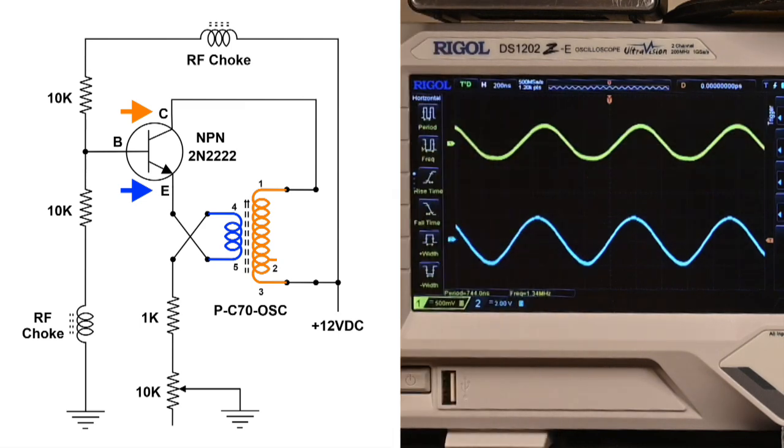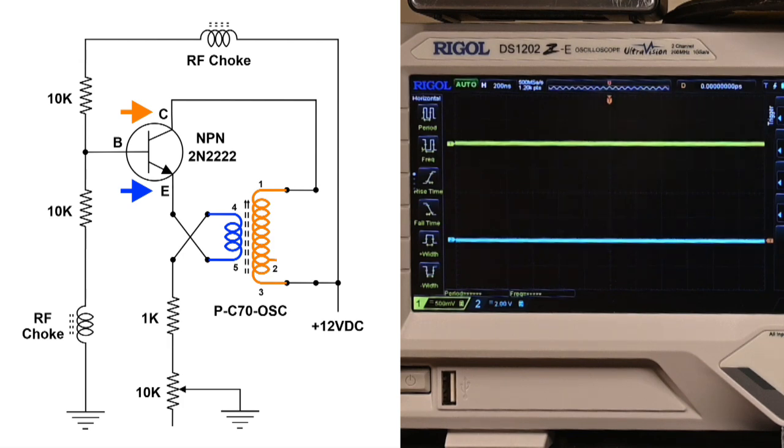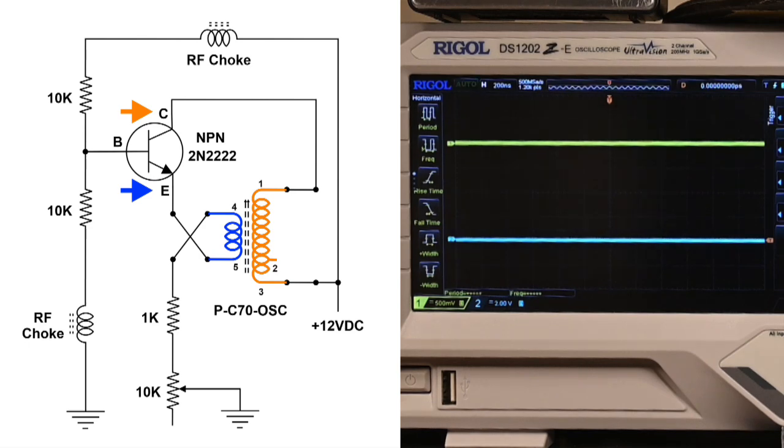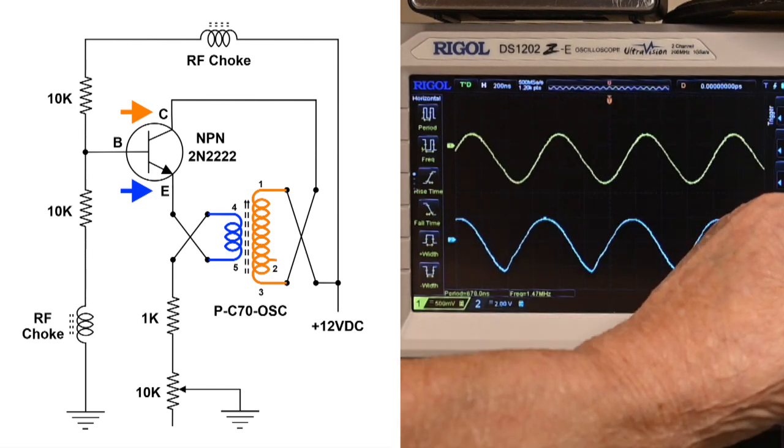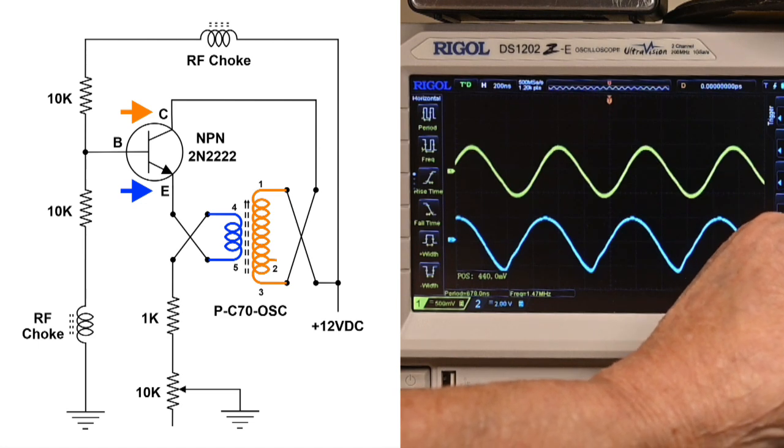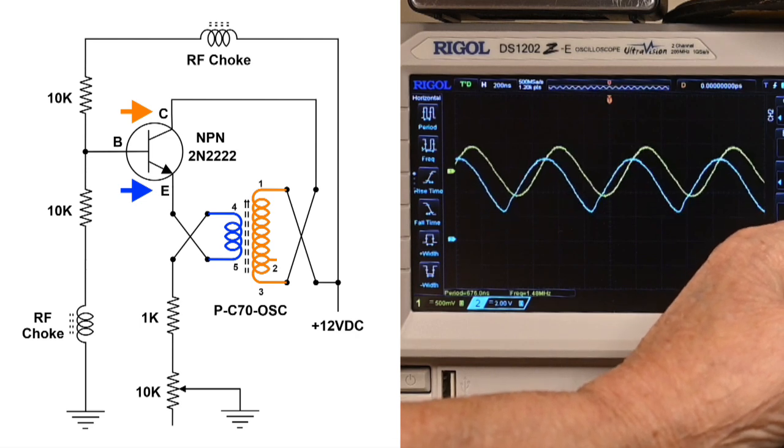Oops. There we go. So let me swap both of them. Well, I've got the emitter swapped. Let me swap the collector or the secondary here. Let's see what happens. Now I've swapped both of them. And it still looks about the same. Let me lower that down. We need to bring that one up. Yep. About the same.